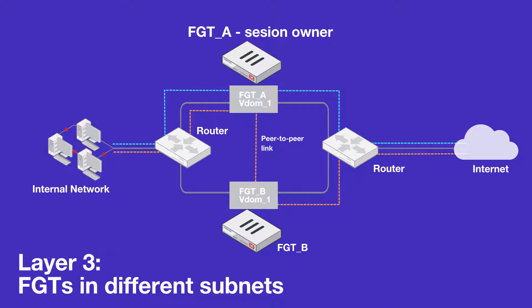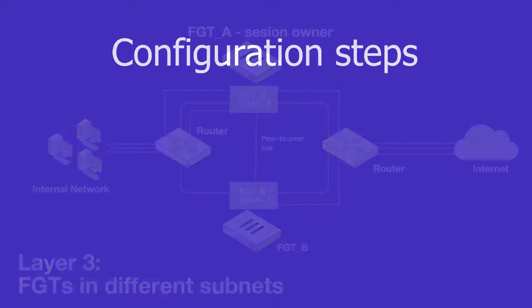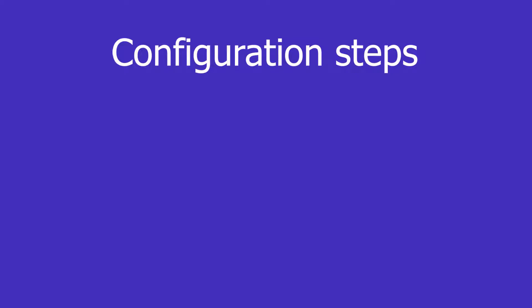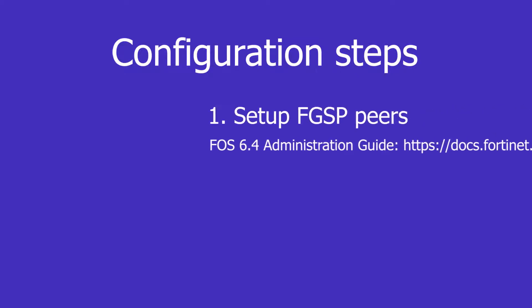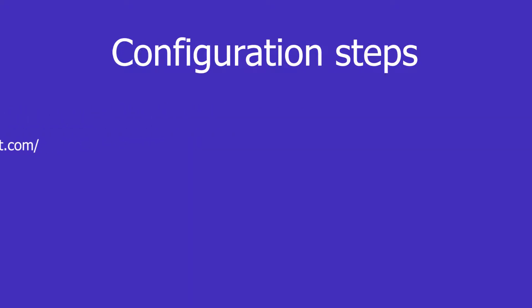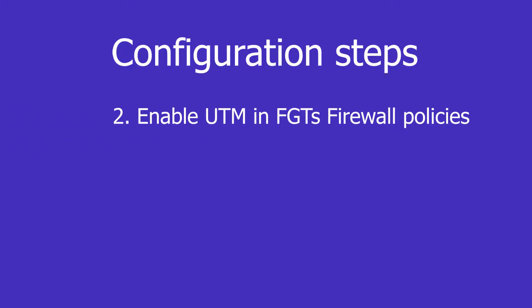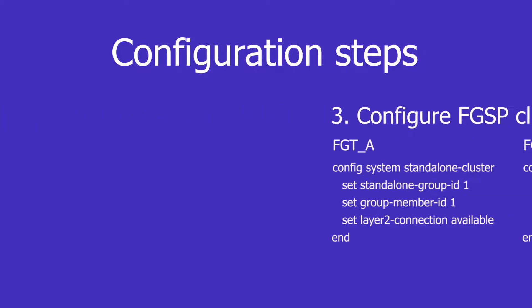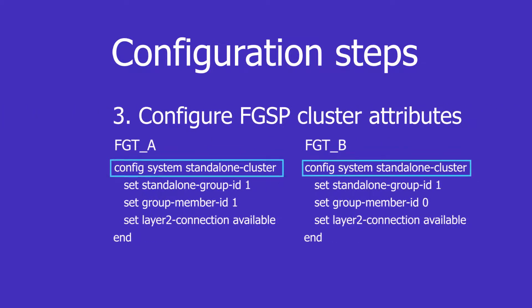Now let's look at the configuration. The functionality is currently available only in the command line interface. You will start with the FGSP peer setup for each FortiGate — for more details, please refer to the online documentation. Next, you will enable UTM in the firewall policy on each FortiGate. We will demonstrate it shortly, and finally there is the new CLI command.